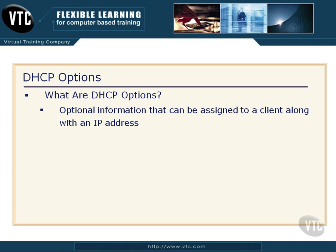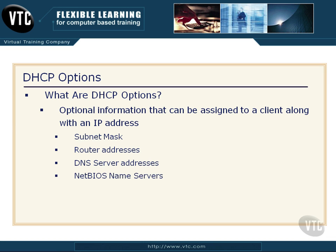What are DHCP options? Well, it's optional information — information that we can choose to be assigned to the client along with an IP address. We're talking about things like the subnet mask that goes with that IP address, router addresses, default gateways, and DNS server addresses. These are things that the client needs, and while we're providing an IP address from a DHCP server, we can transmit this information and fully configure that client — not only for an IP address that allows it to communicate on the network, but also giving it all the other services it needs to find various network services.